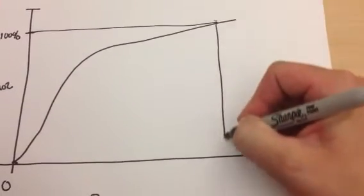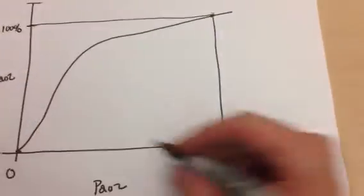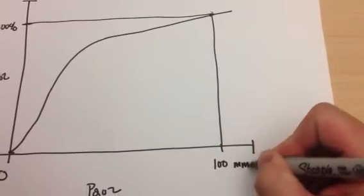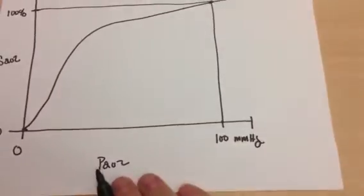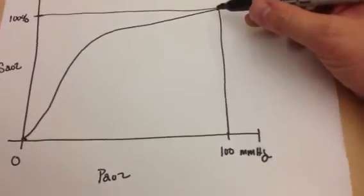And we'll just say that a normal PaO2 in a person is 80 to 100 millimeters of mercury. Let's just go ahead and correlate that point, the 100% SaO2, and let's just say that is 100 millimeters of mercury on the PaO2. 100 and 100, that makes it kind of simple, kind of easy.